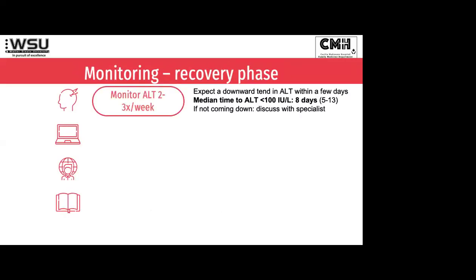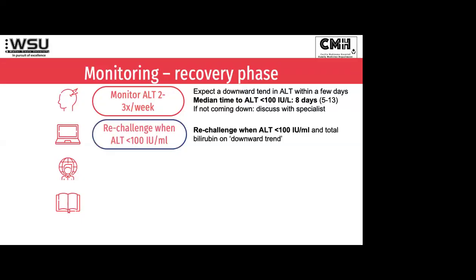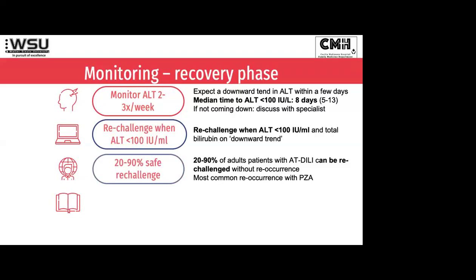In terms of monitoring, you're going to do the ALT two or three times a week, which works nicely if you're in the ward. You want to get that ALT under 100 — it takes about a week, sometimes two weeks. The bilirubin: they're more relaxed now; the bilirubin doesn't have to be normal, it just has to be on a downward trend. Once the ALT is under 100, we can actually re-challenge our patients. Important to realize that somewhere closer to 90% of patients can usually be re-challenged very safely.